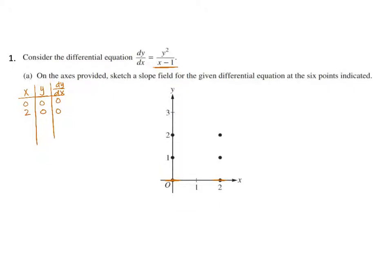Now let's move on to our other point. We have (0, 1). When I substitute that in, I'm going to have 1 over negative 1, so I have negative 1. I'm going to sketch a slope segment that has a slope of negative 1. It doesn't have to be perfect, just as long as it's tilted negatively — that's going to be the important part.